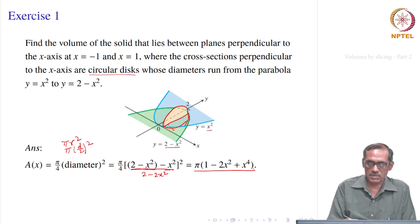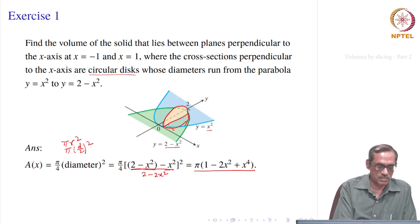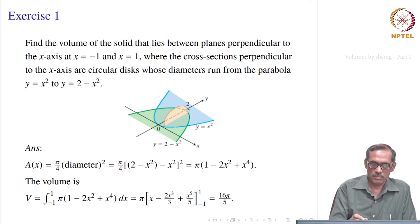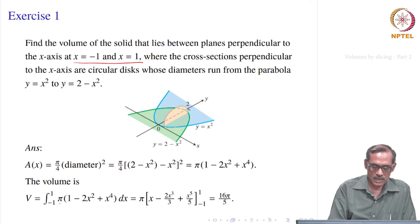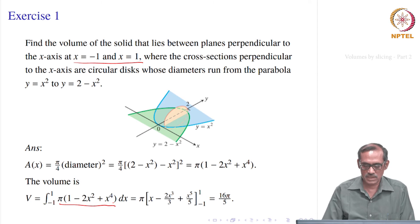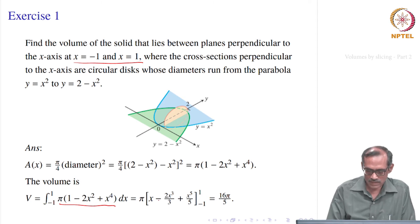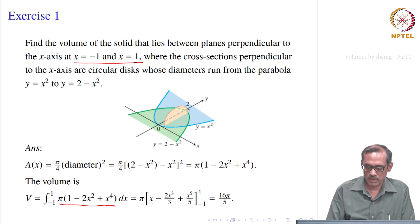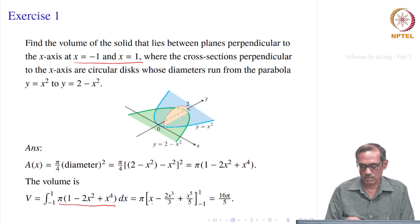So once this is achieved, it will be easier to compute the volume just by the formula. The volume will be the integral from -1 to 1 of A(x) dx, which is π times the integral of (1 - 2x² + x⁴) dx. Integrating: 1 gives x, x² gives x³/3, x⁴ gives x⁵/5. Evaluated at 1 and minus 1 and subtracted, that would give 16π/5.